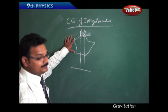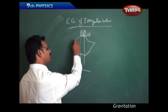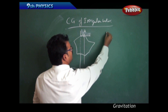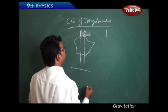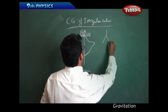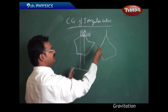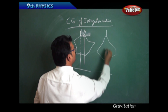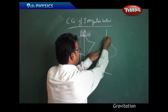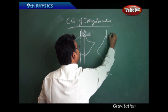Now take the same surface and turn it to another point — you can take any other point. Make a hole there, take a scale, and draw a straight line. Call this point B. So we now have line A and line B, and you can see the two lines are intersecting.